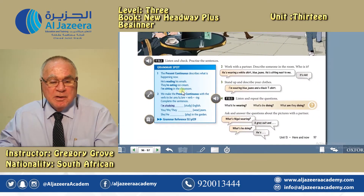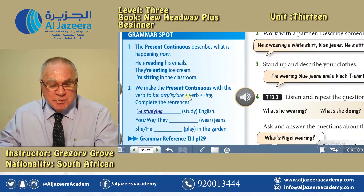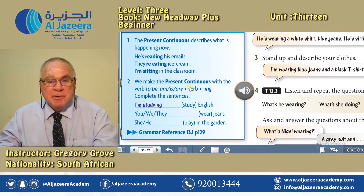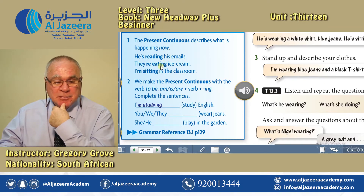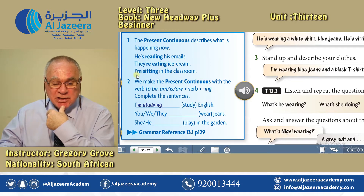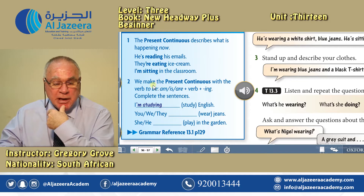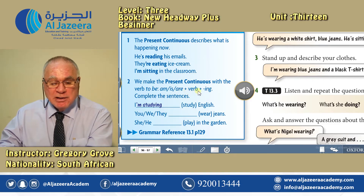Now, grammar spot. The present continuous describes what is happening now. For instance: he's reading his emails, they are eating ice cream, I'm sitting in the classroom. And we make the present continuous with the verb to be — am, is, or are — plus the verb, plus -ing.